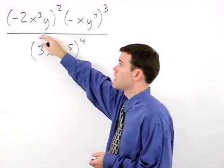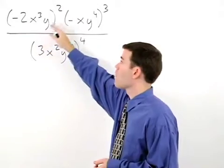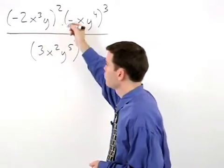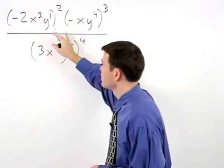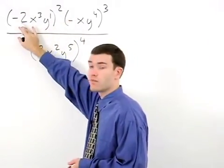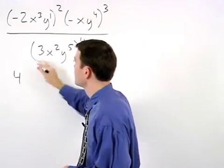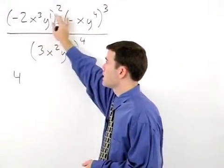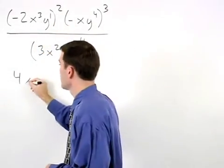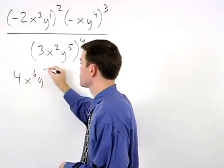To simplify negative 2 x to the third y squared, think of y as y to the first and square the coefficient of negative 2 to get positive 4 and multiply each of our exponents by 2 to get x to the sixth y squared.